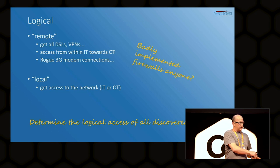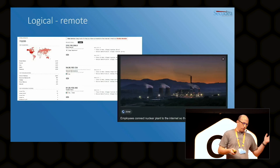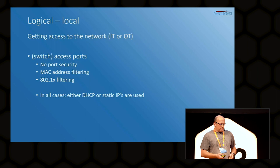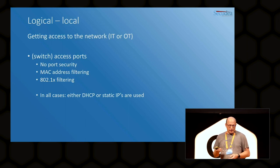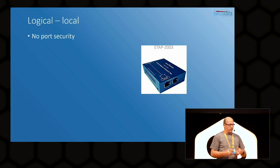On the local part: we've done all the physical testing and verified all the logical access ports. Now what can you do? We try to determine the logical access of all discovered ports. On switch access ports, either there's no port security, there's MAC security, or 802.1x. It's either DHCP or static IPs. I've run into too many occasions where engineers believe that having static IP addresses is a form of security — it's not. Use a network tap, prove you can just lift the network and get in by changing IP addresses. It's very easy.